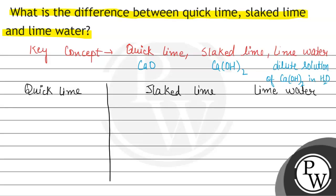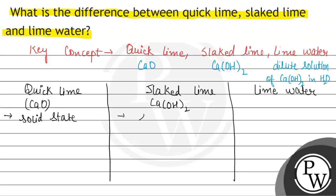So let us look at the difference in the physical state of the three of them. Quick lime remains in the solid state, and it is calcium oxide. Slaked lime, which is calcium hydroxide, also remains in the solid state. Whereas lime water is the dilute solution of calcium hydroxide in water, so it is liquid.